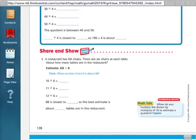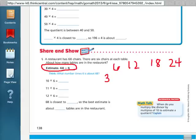Okay, so we're going to try another one here at the Share and Show. It says a restaurant has 68 chairs. There are six chairs at each table. About how many tables are in the restaurant? So our problem is estimating 68 divided by 6. So what we're going to do is use our multiples of 6 to get close to 68. So my multiples of 6 are 6, 12, 18, 24, 30.